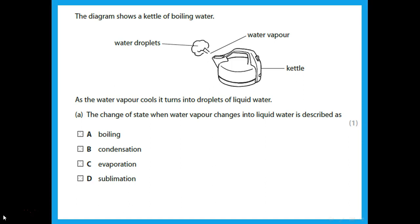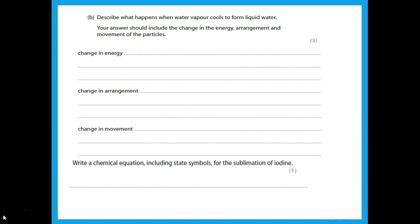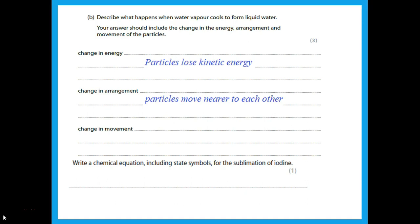A diagram shows a kettle of boiling water. As the water vapor cools it turns into droplets of liquid water. The change of state when water vapor — a gas — changes into liquid is condensation. When describing what happens: the particles lose kinetic energy, they move nearer to each other, and they move more slowly.